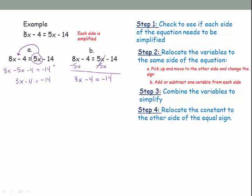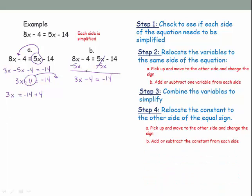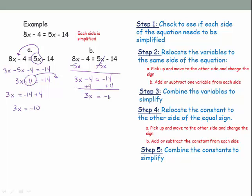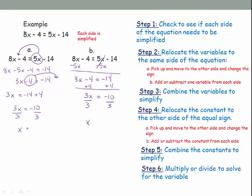Then relocate the constant to the other side — either pick up the negative 4 and move it, making it positive, or add 4 to both sides. This gives 3x equals negative 10. Finally, divide both sides by 3 — since 10 doesn't divide evenly by 3, the answer is x equals negative ten-thirds.